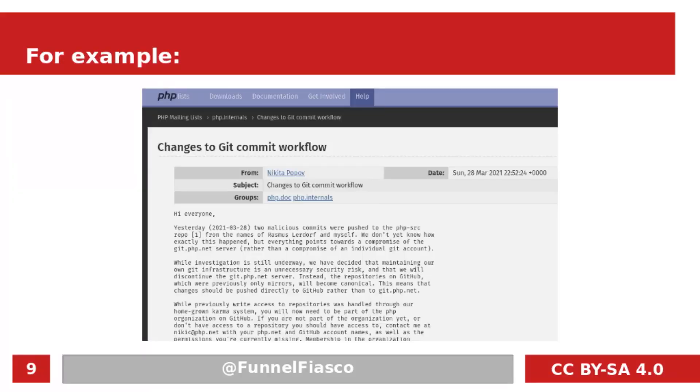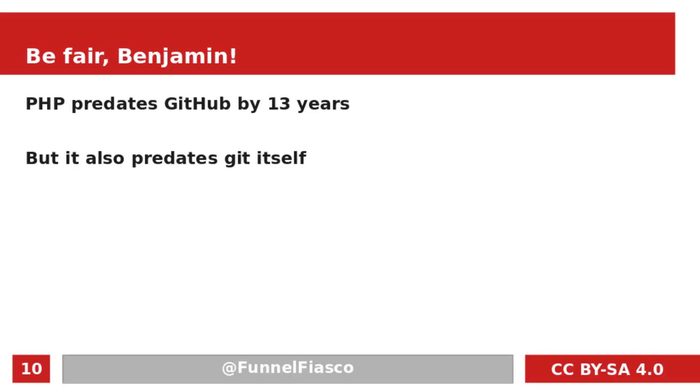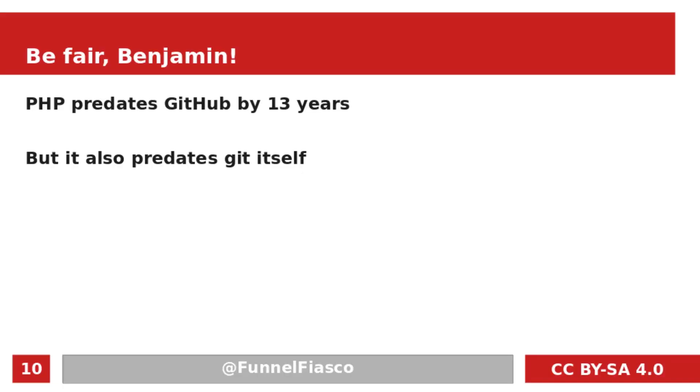The PHP project learned this lesson recently when they got compromised a little. I want to be fair — I'm not picking on PHP. It's a great project and they responded to it really well. It's just a very recent example of why you maybe shouldn't do this. PHP predates GitHub by 13 years, so it's not like the project could have on day one said, let's have GitHub as our Git forge so we don't have to worry about it. It also predates Git itself, which is actually sort of an argument that they moved from whatever they were using before to Git, so they could also move from whatever Git forge they were using to GitHub.